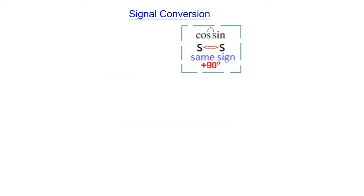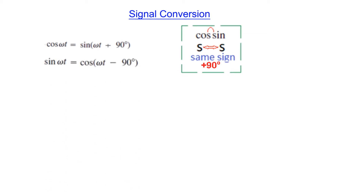A trick to remember: when converting from cosine to sine, we are going from 'c' to 's', so you add plus 90 degrees. For example, cosine(ωt) converted to sine(ωt) — since it's c to s, we add 90 degrees. The opposite applies: converting from sine to cosine is 'n to c', so we subtract 90 degrees — negative 90 for sine to cosine.